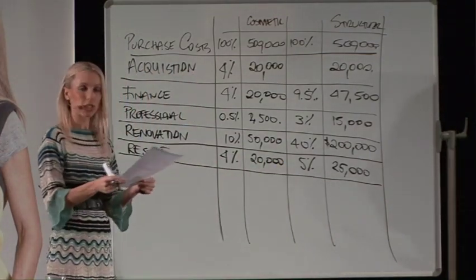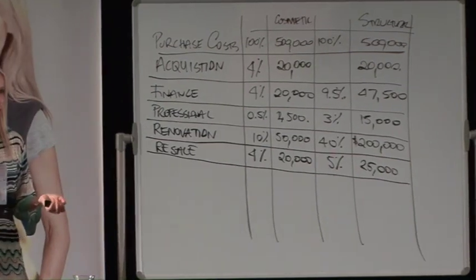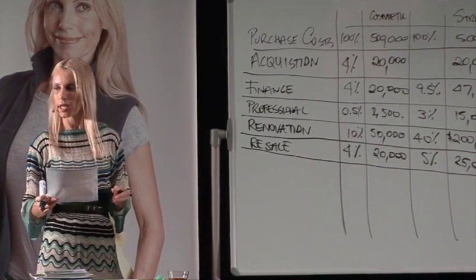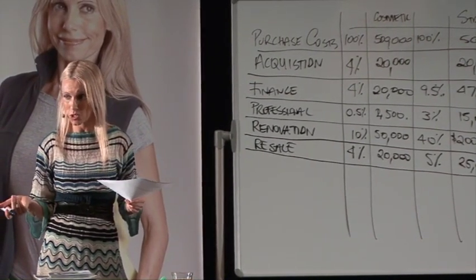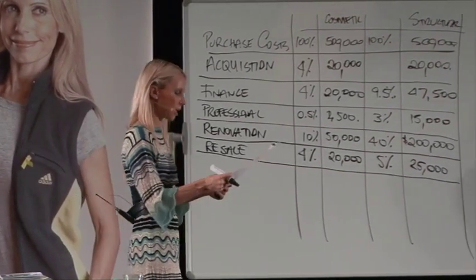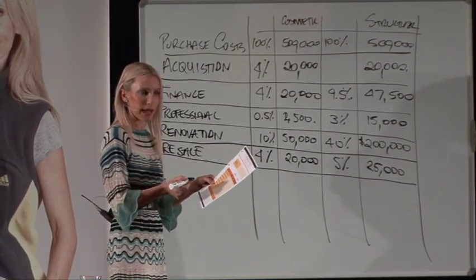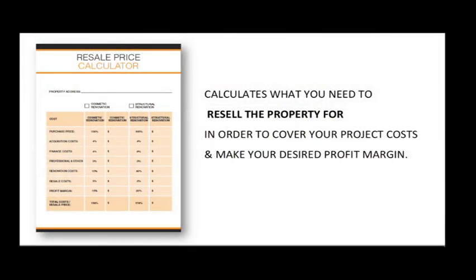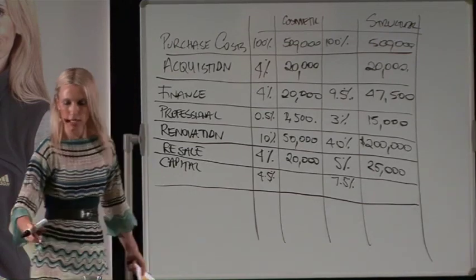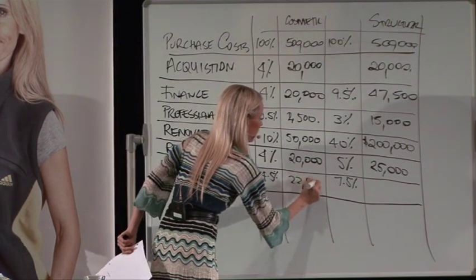I've just rejigged these calculators to factor in capital gains tax as well, because some students asked about it. Some of you won't incur capital gains tax — you might renovate and rent, or take a long-term view. So you can take capital gains tax out if you want; this is a worst-case scenario. The figures are 4.5% — so $2,250 for cosmetic — and $37,500 for structural.